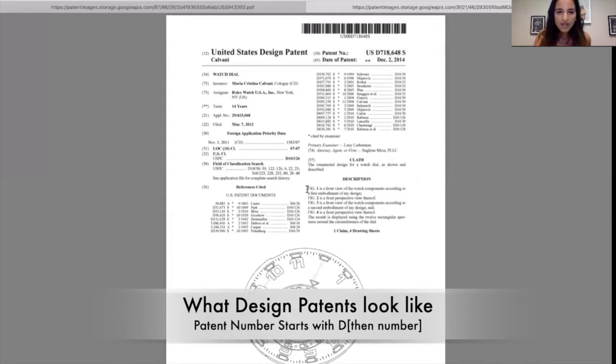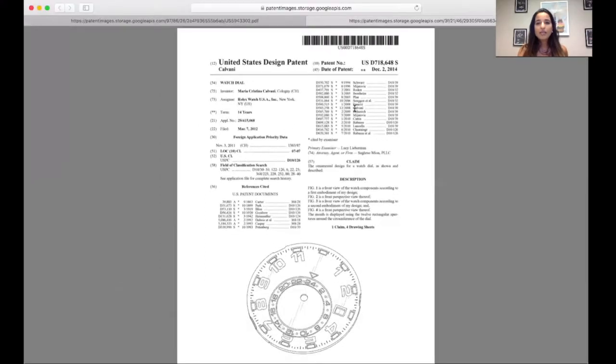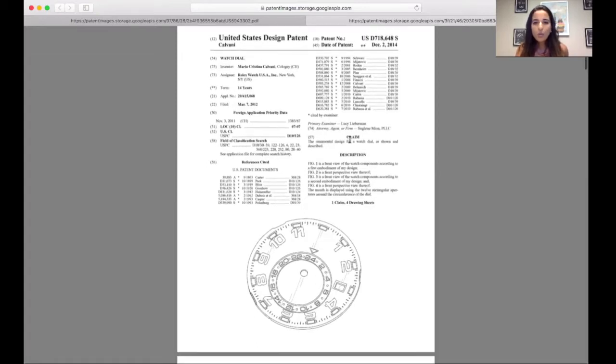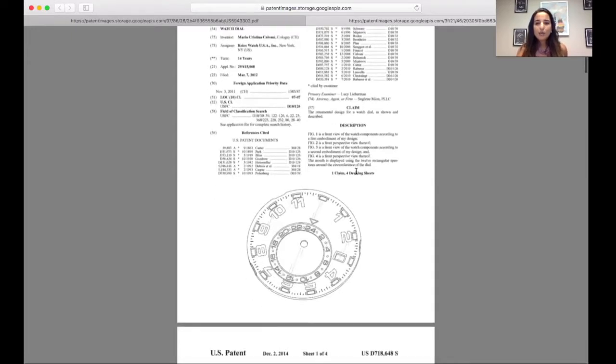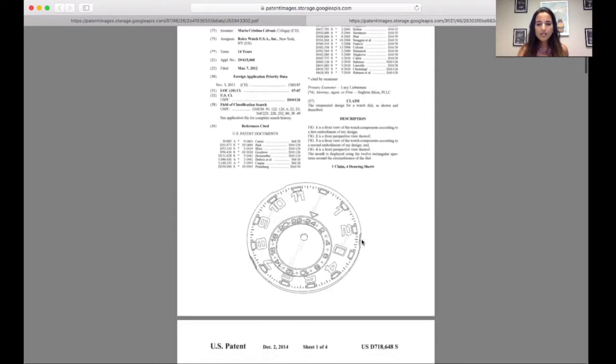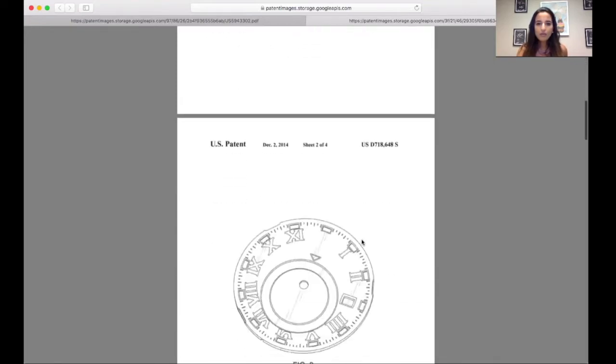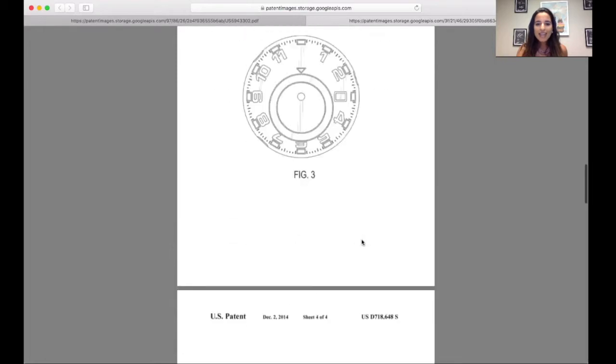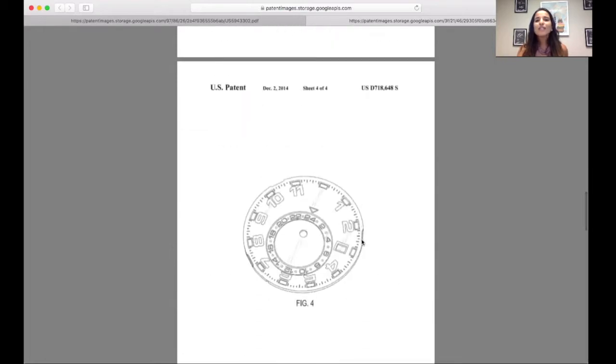Now here we have a design patent in front of me and you'll notice that the number here, the patent number, the number of the issued patent starts with a D and that means that this is a design patent. Additionally, you'll notice that there's only one claim right here and it's the ornamental design. In this case, it's for a watch dial and you'll have the description of four figures in this case. So you'll have the four figures and that's it. This is the end of the design patent.